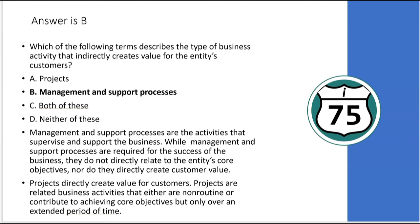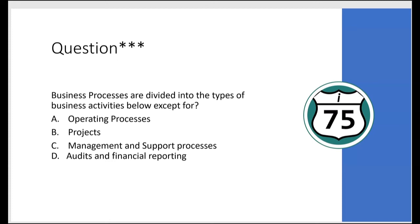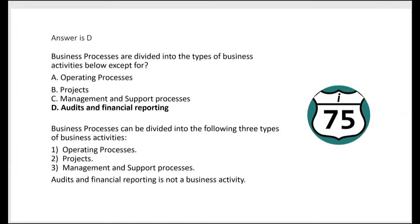How about this one: business processes are divided into the types of business activities below, except for — A: operating processes, no; B: projects, no; C: management and support, no; D: audits and financial reporting — letter D is the answer, because audits and financial reporting is not a category that business processes are divided into. The three types are operating processes, projects, and management and support.